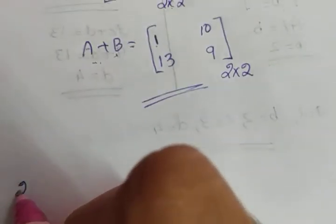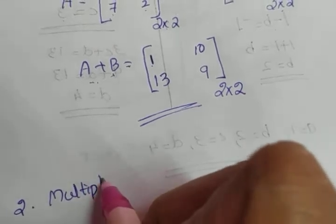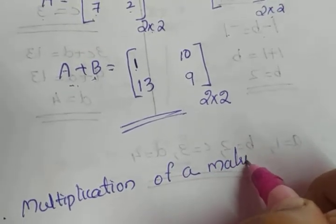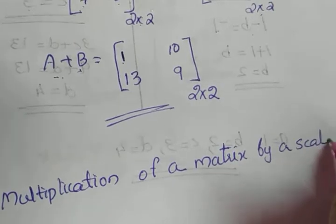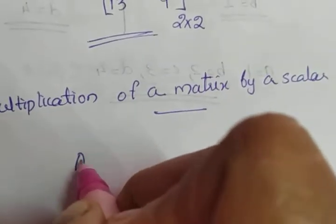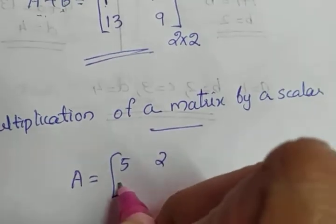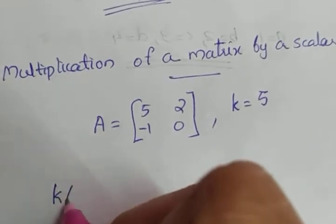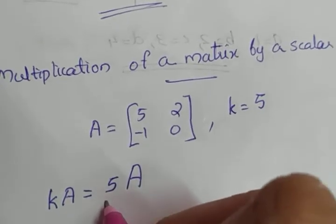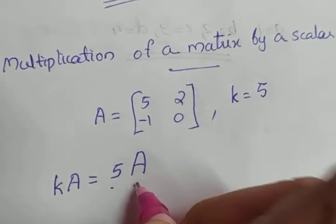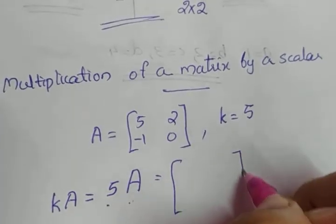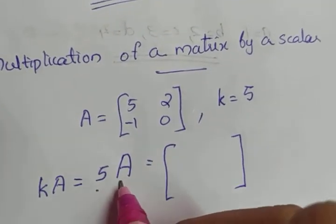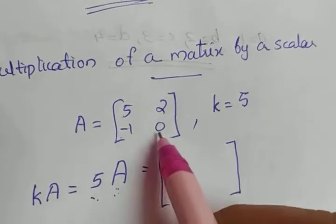The second operation is multiplication of a matrix by a scalar. We are not multiplying two matrices here — we are multiplying a matrix by a scalar, which means a constant. If A equals [5, 2; −1, 0] and the scalar K is 5, then K into A means 5 times matrix A. We can perform this operation on a matrix of any order. What we do is multiply each and every element of A by 5.